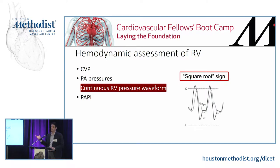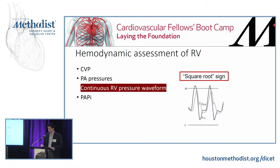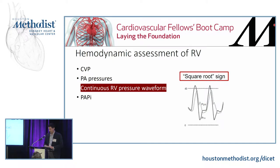You might also pick up with continuous RV tracing that the upslope during systole would be delayed — kind of the equivalent of pulsus tardus you might see with the LV. You can also get that with an RV tracing. And in the rare instance of RVOT obstruction, you'd be able to easily pick it up because the RV pressure would be very high and the PA systolic pressure would be low.